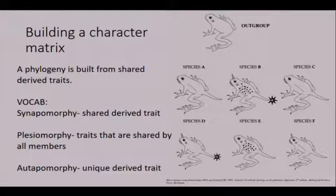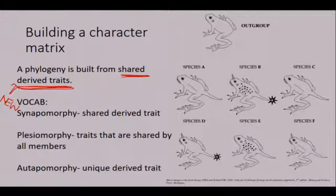This is an example I borrowed from a lab on the internet. We talked about how a phylogeny is the evolutionary history. We infer evolutionary history by looking at shared derived traits. What does that mean? That means unique, new traits that groups share.